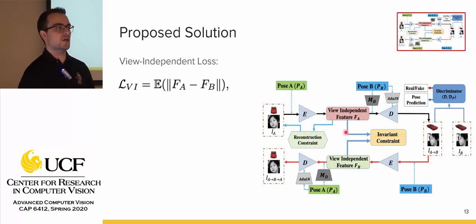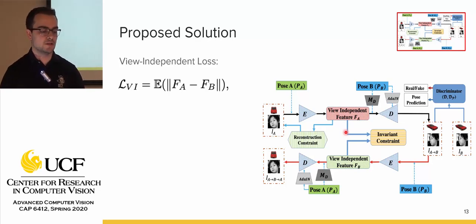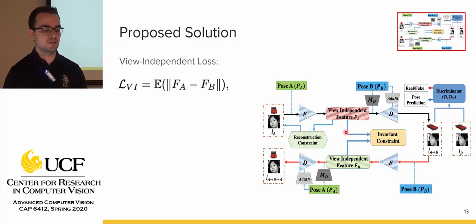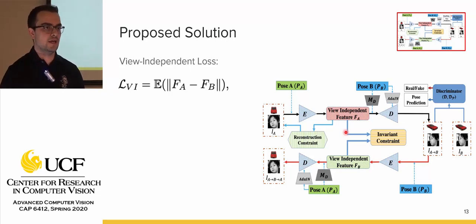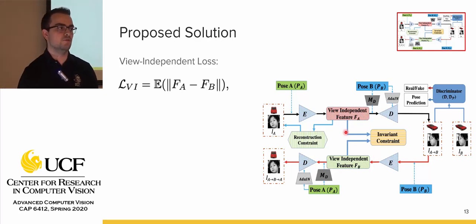The first loss function is view-independence loss. This is computed by running two different images with poses through the encoder and obtaining their view-independent features. The model optimizes the difference between these features because it wants to find all viewpoint-invariant features. In theory, identical features should be obtainable from two different poses of the same object.